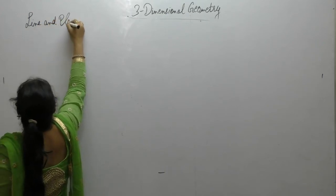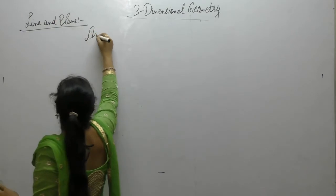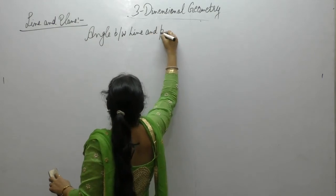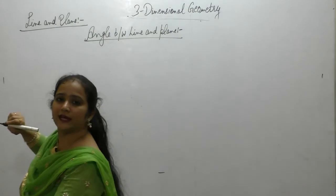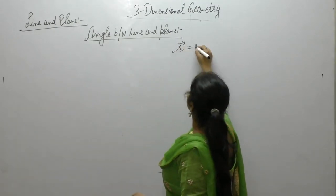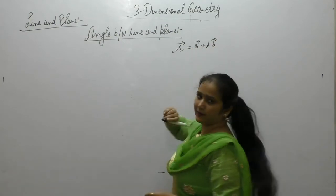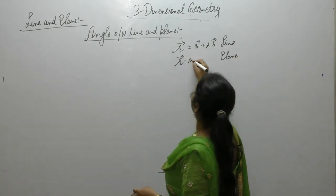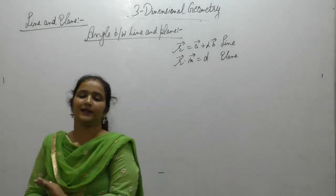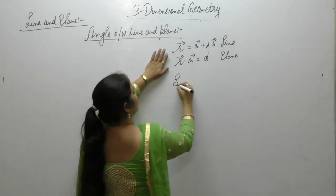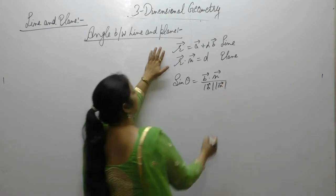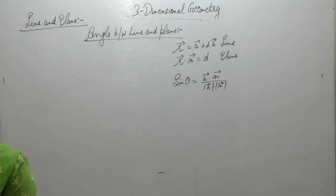The angle between a line and a plane: if the equation of the line is r vector = a vector + λb vector, and the equation of the plane in vector form is r·n = d, then the angle between the line and plane is given by sin θ = (b·n) / (|b| |n|).